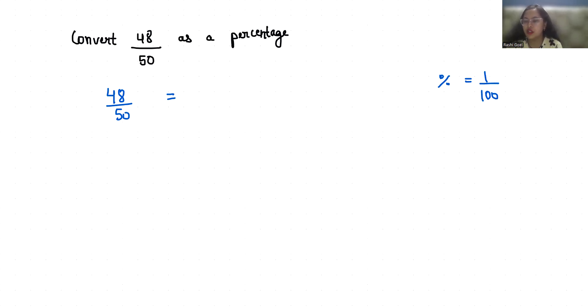Where 1 is numerator and 100 is denominator. So we need 100 in denominator. To get 100 in denominator, we have to multiply by 2. If you make any change in denominator you have to make the similar change in numerator as well. So 48 times 2 by 50 times 2 is 100. 48 times 2 is 96.